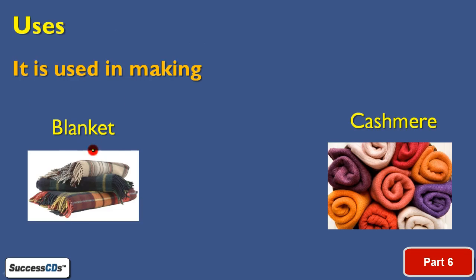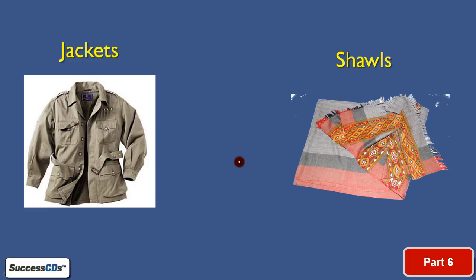Acrylic is used to make blankets, shawls — like cashmere-style shawls — and jackets. These are the kinds of items you can make from the synthetic fiber acrylonitrile (acrylic).